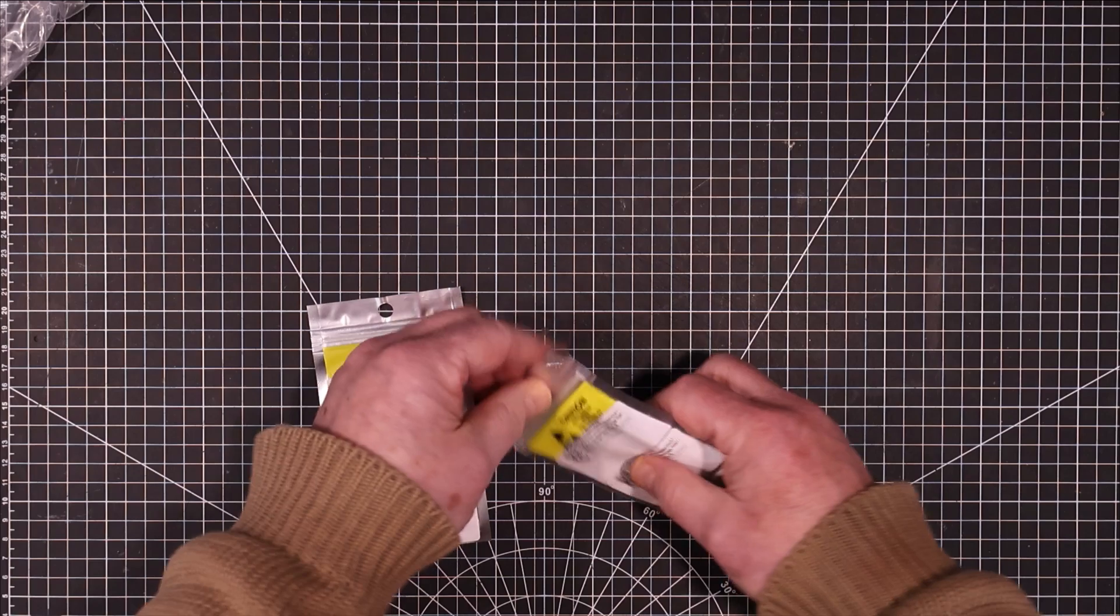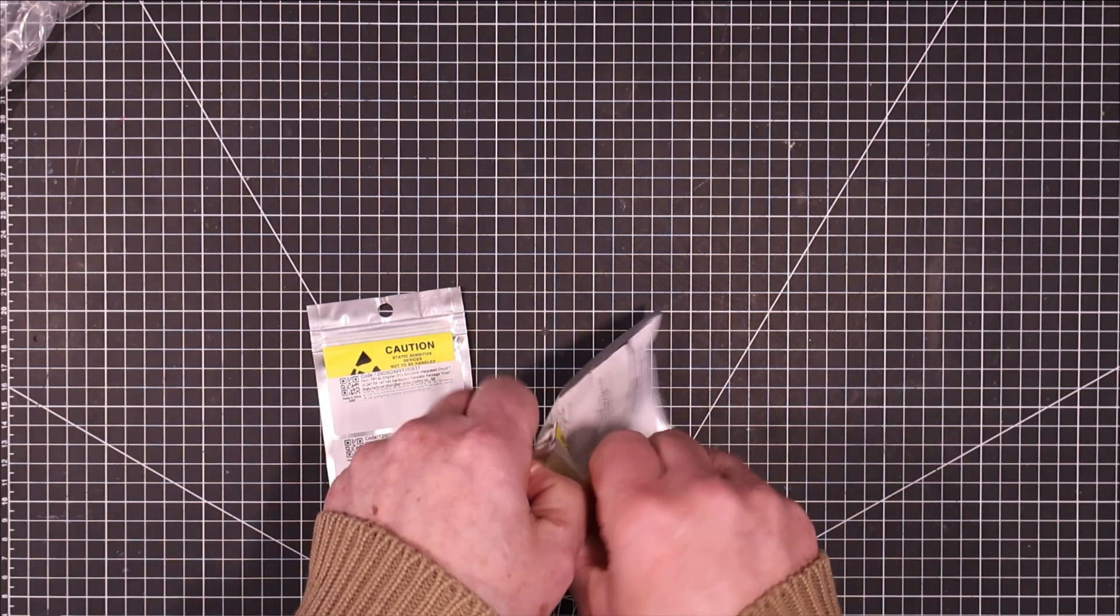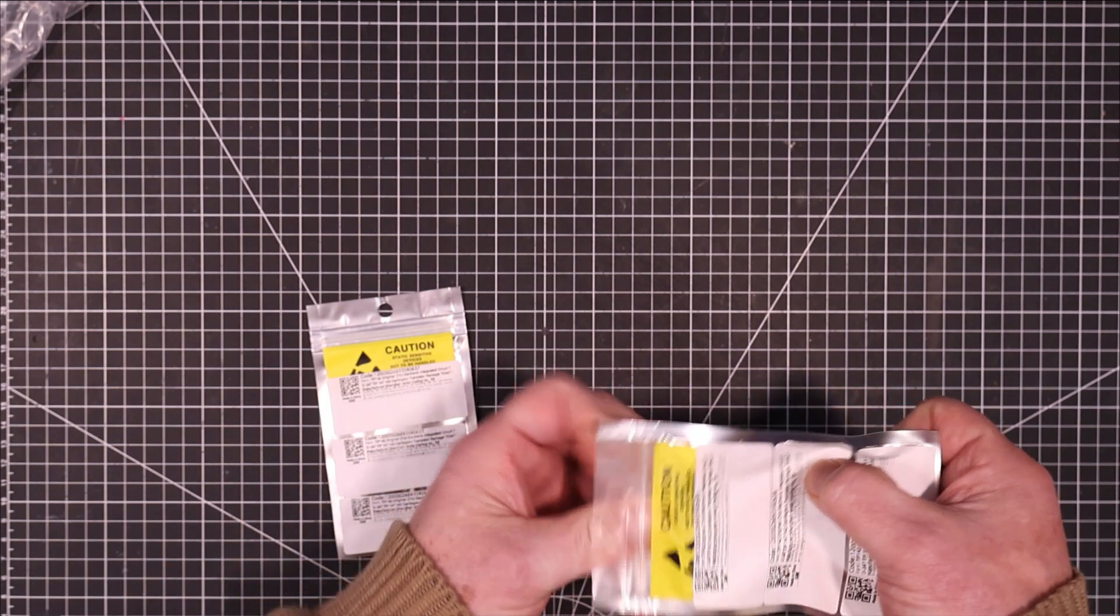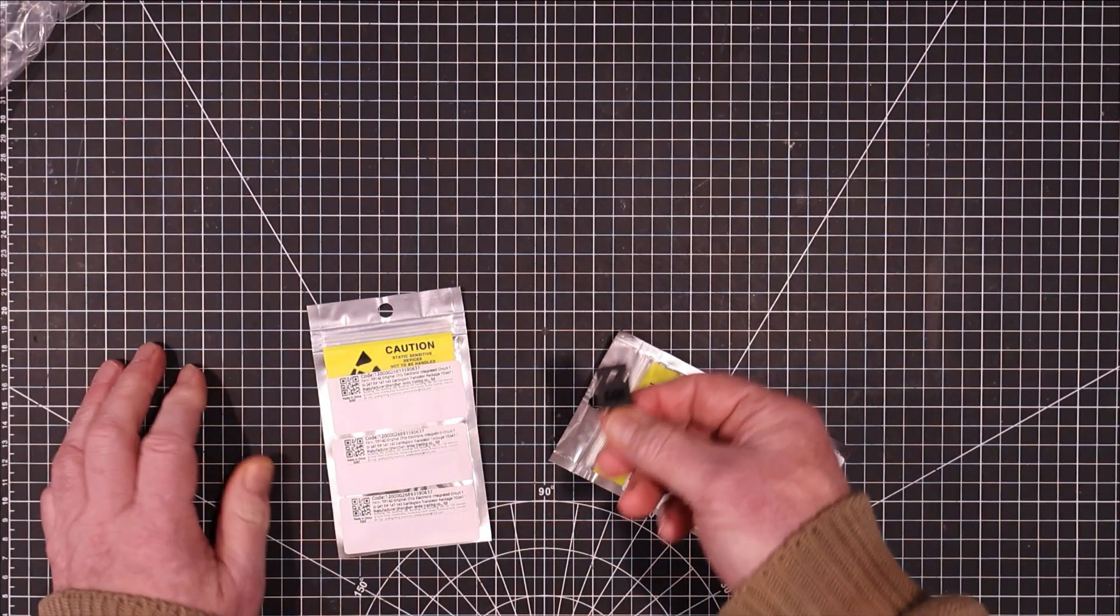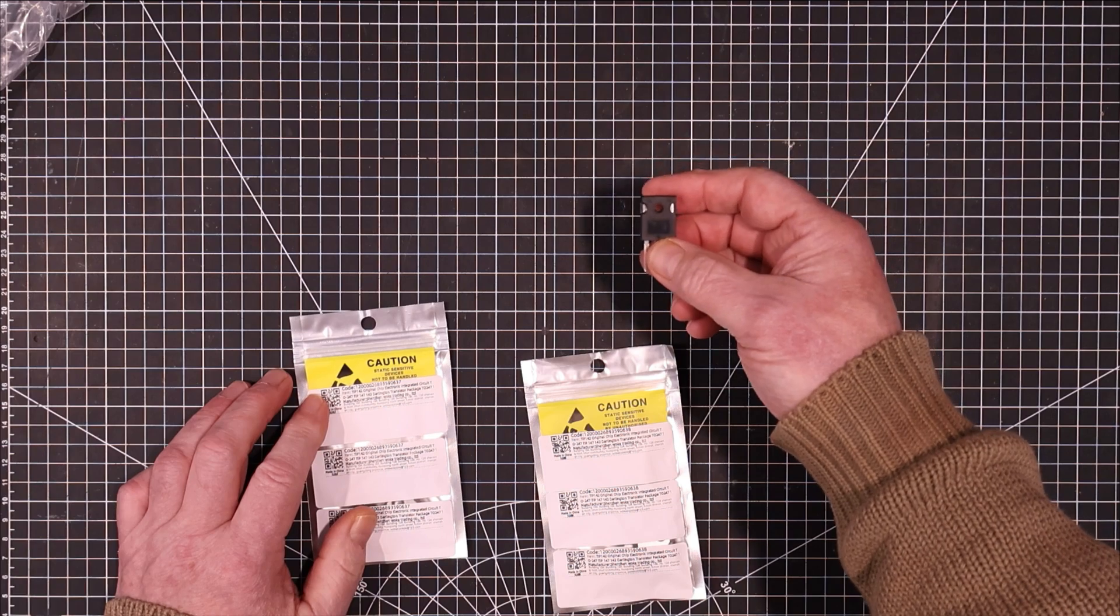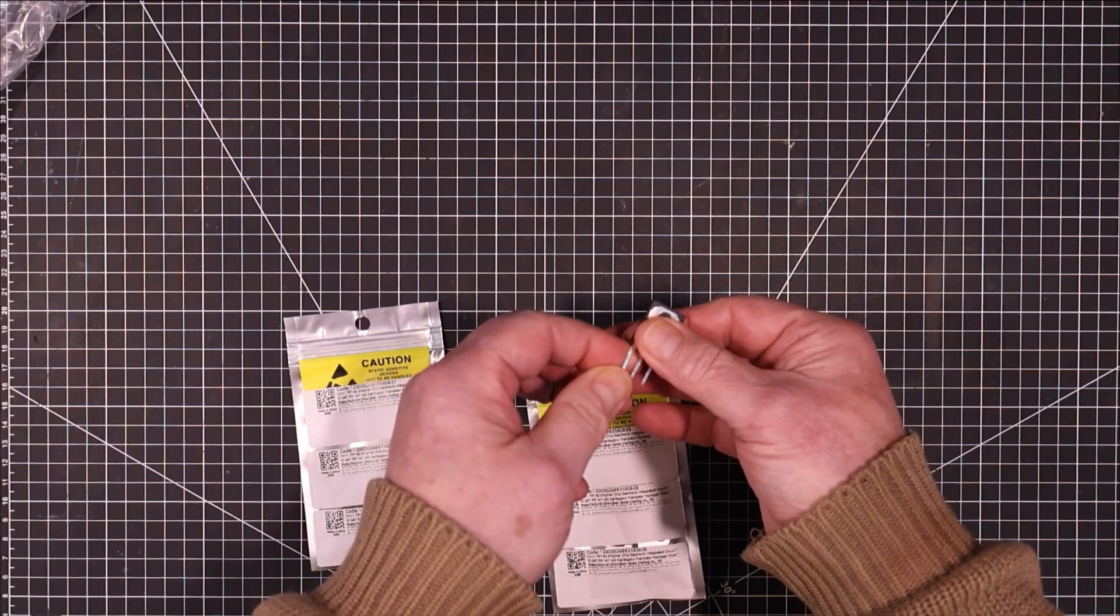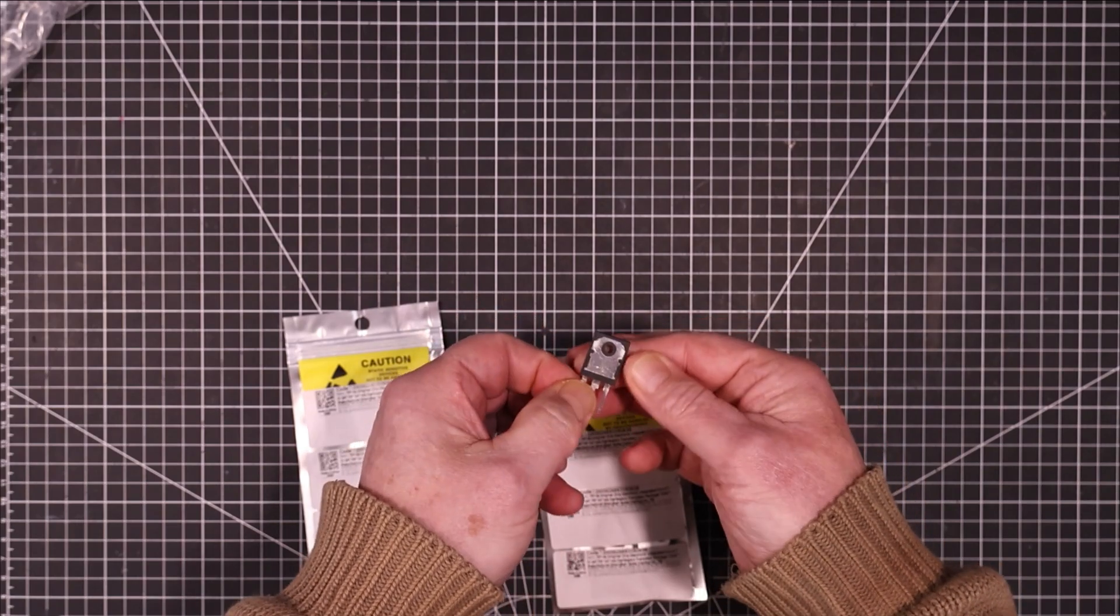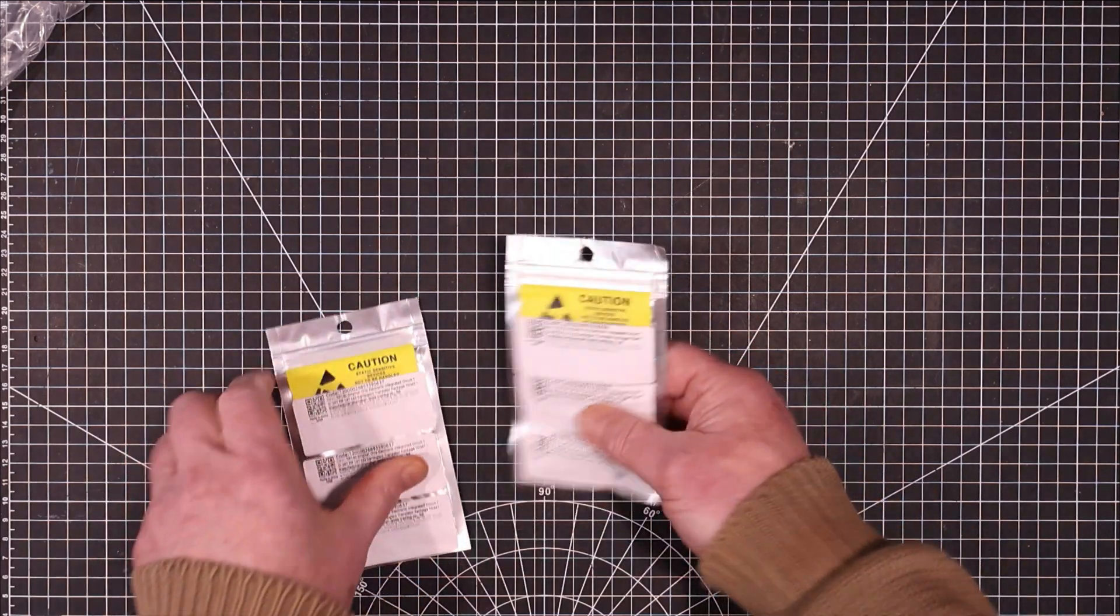So these are transistors. These are TIP-142s and 147s or complementary Darlington transistors. These are the type I'm using in my cheap guitar amplifier. So I thought a couple of iterations of those and I'd run out of them. So I needed to get some spares. And I've never bought these before from AliExpress. So I'm dying to find out if they're up to spec or not. And we'll find out. If you're following along on that project, we'll find out because the next iteration I'll be using these.